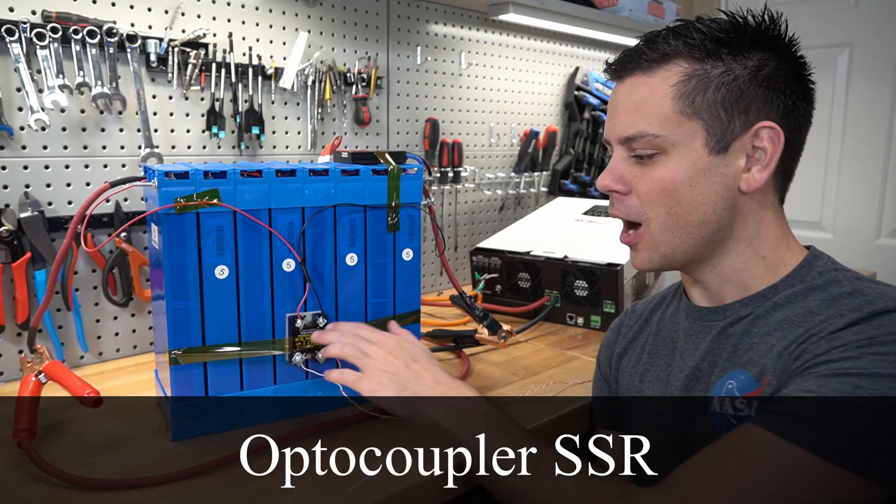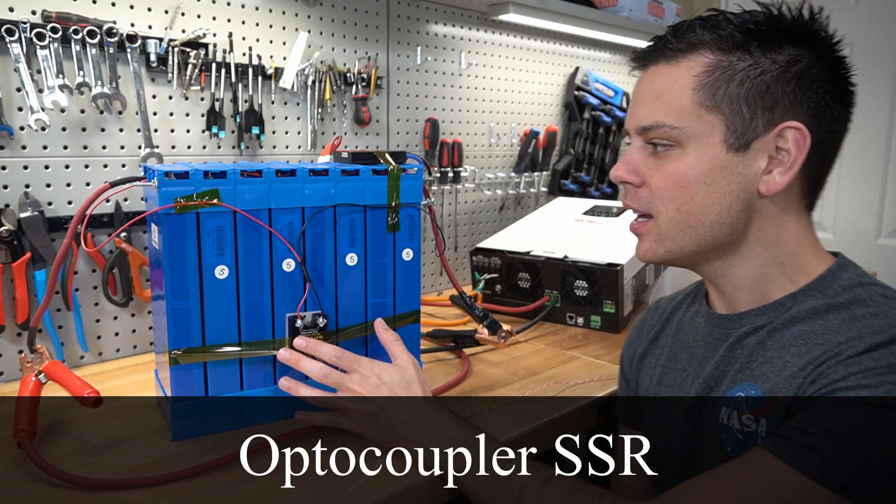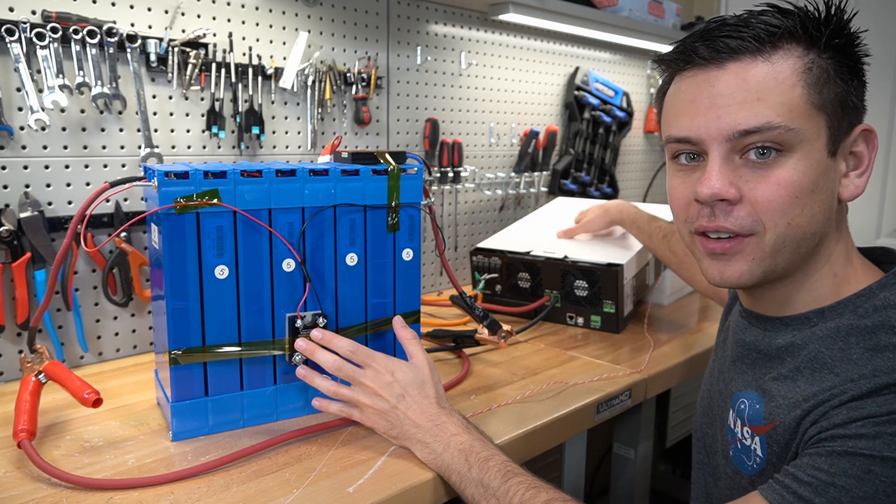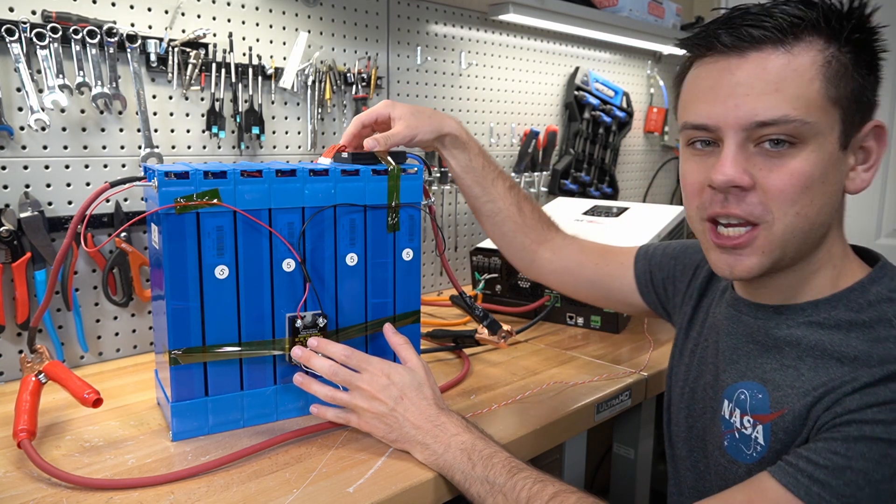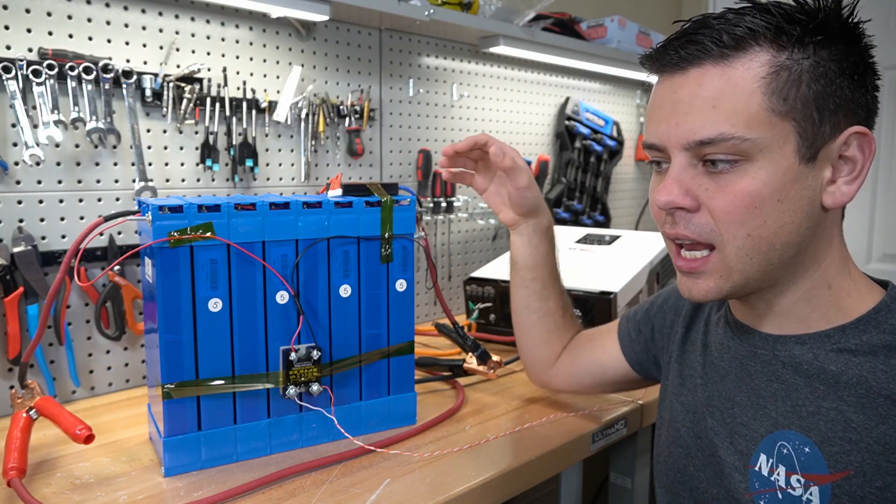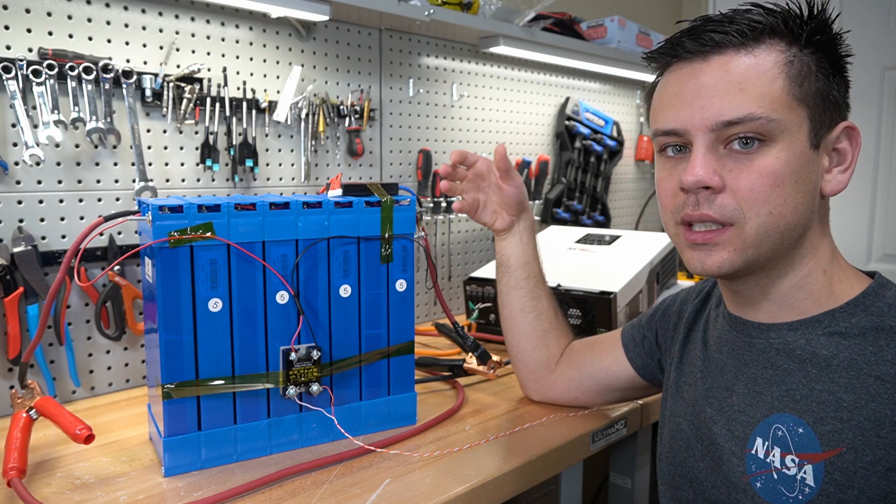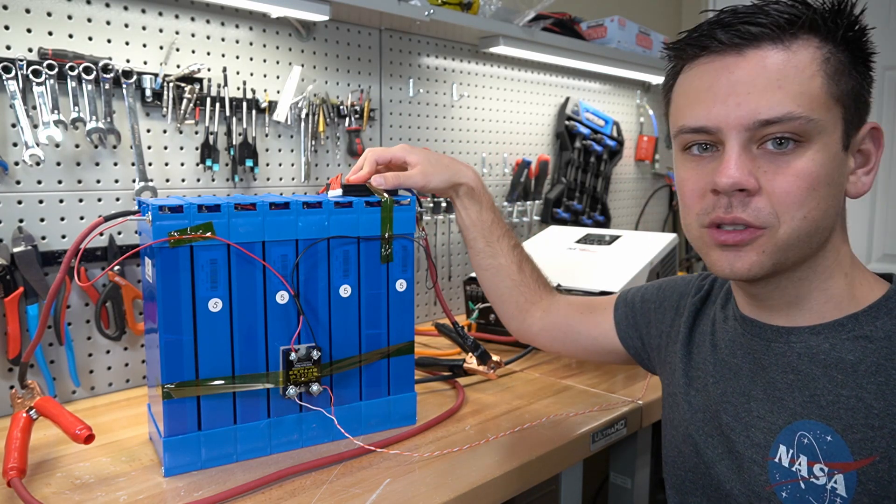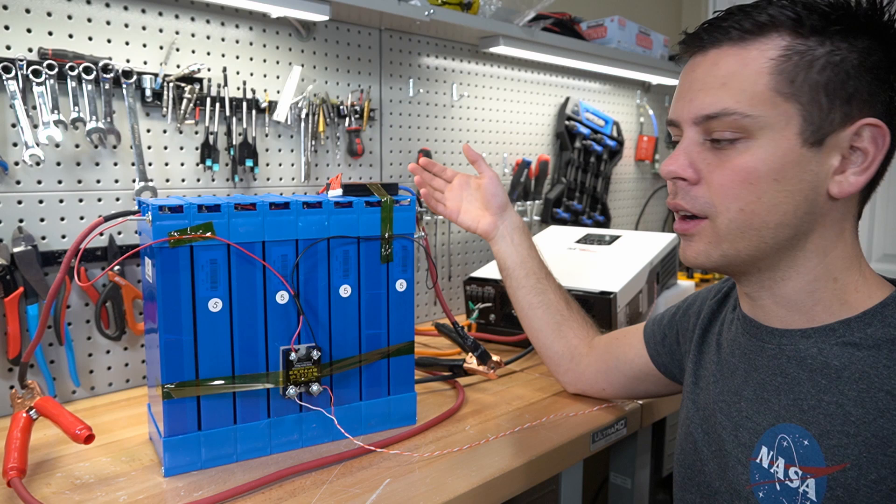Today we're going to learn how to use an optocoupler or a solid state relay to switch on and off an inverter with a cheap BMS. This will enable people to get over some of the limitations of a BMS that uses FETs for switching the loads on and off.